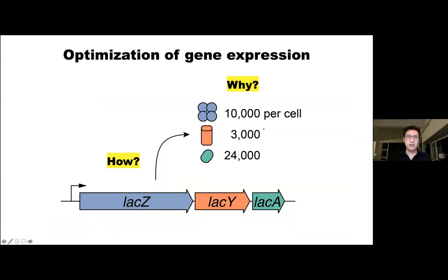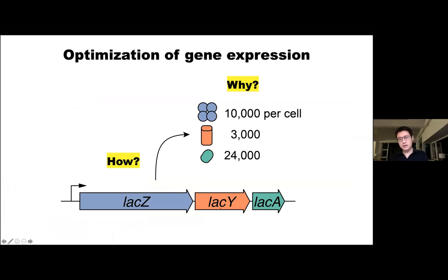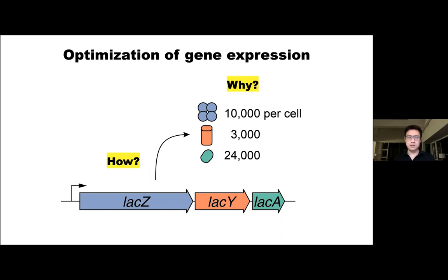We and many others have been working towards deciphering both why and how cells optimize gene expression. If you take a look at the lac operon, for example, it produces three times more beta-galactosidase, encoded in lacZ, than the lactose permease. Why these numbers? I believe that if we're ever able to truly understand biology at the same mechanistic level as physics or chemistry, we must one day be able to derive why cells need these ratios of enzymes given biochemical properties such as Kcat or Km.